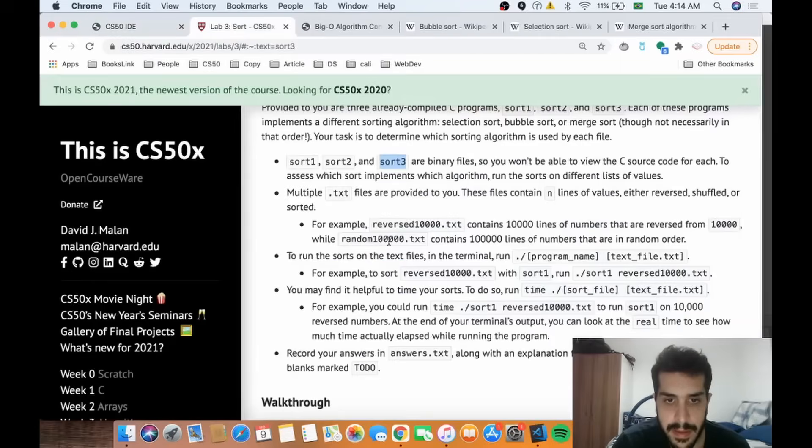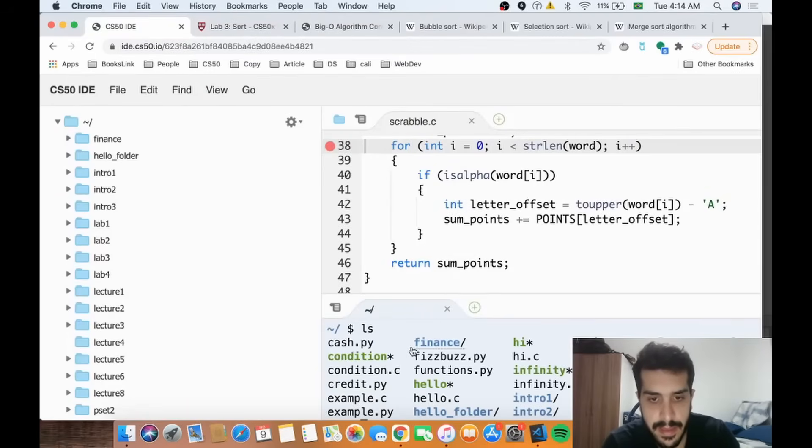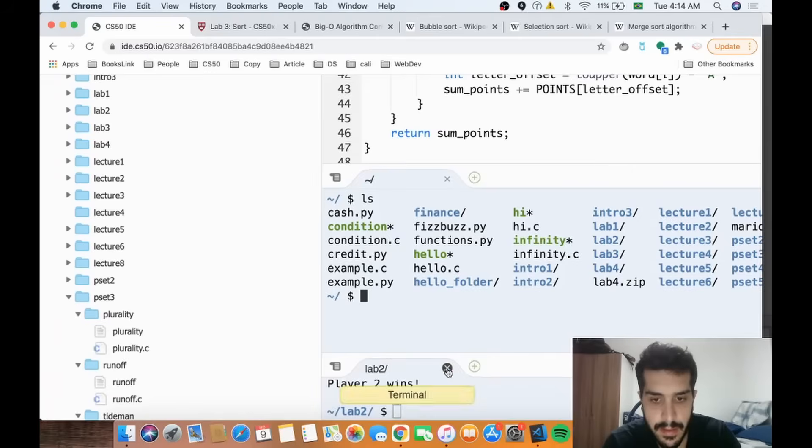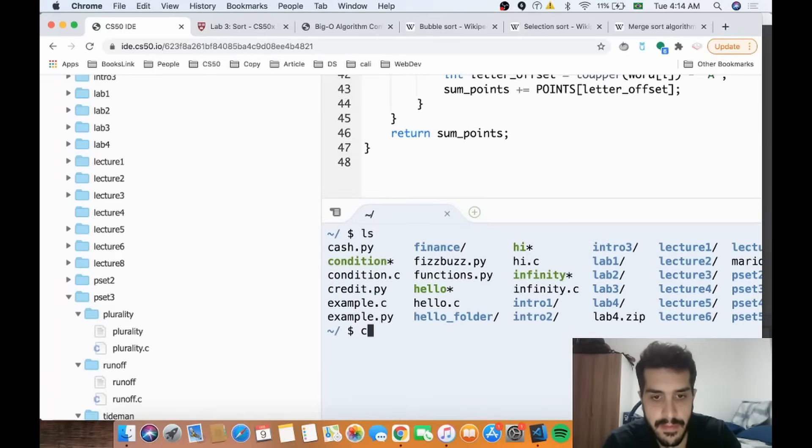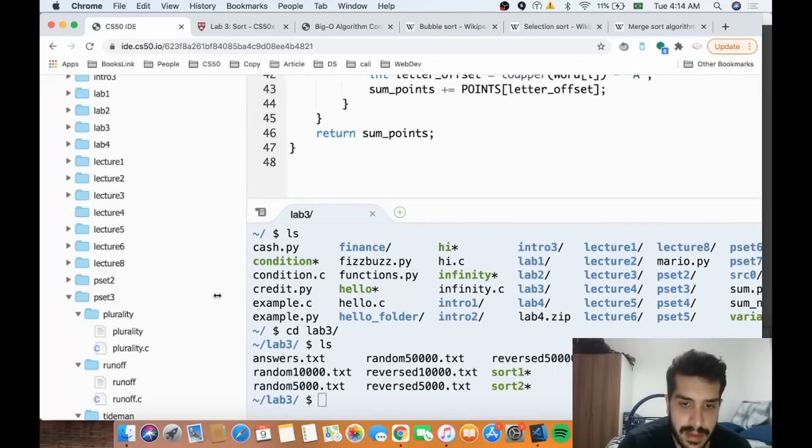Okay, so let's see how that works. Basically, I have the program name and a text file. So let's first look at those text files. So we have a bunch of text files. Oh okay, so we have a bunch of text files on Lab 3. Let's inspect them, so we have a list of...